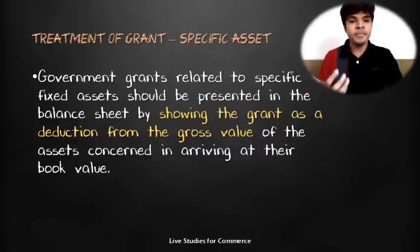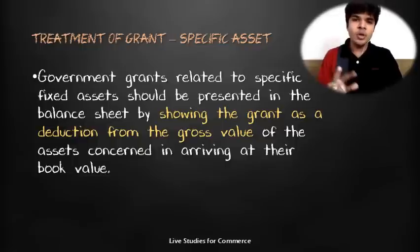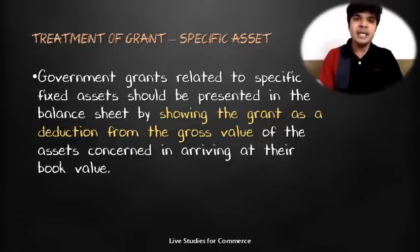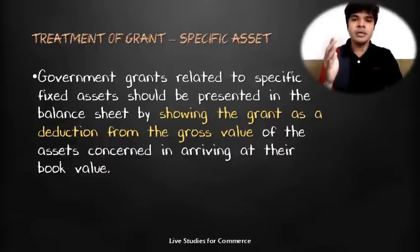For example, if your asset is worth ₹5 lakh and the government gave you a grant of ₹2 lakh specifically for that fixed asset, then in the balance sheet you would deduct ₹2 lakh from ₹5 lakh and show the asset at only ₹3 lakh.